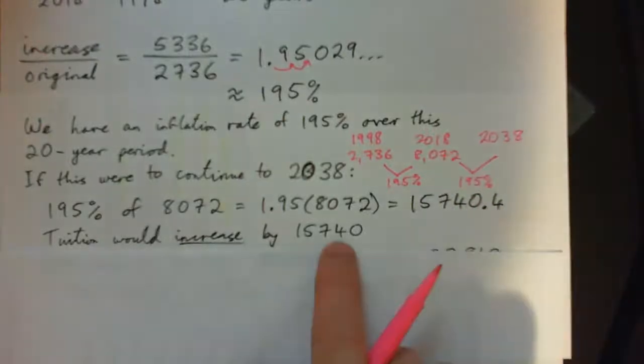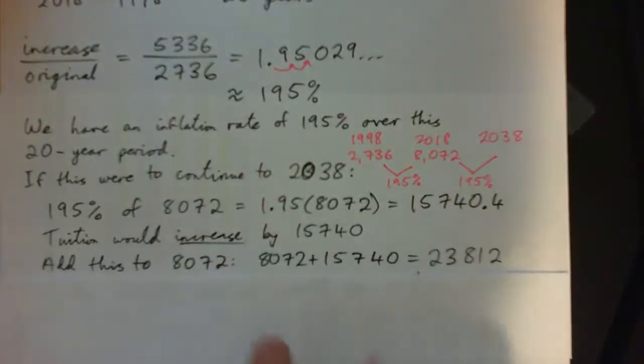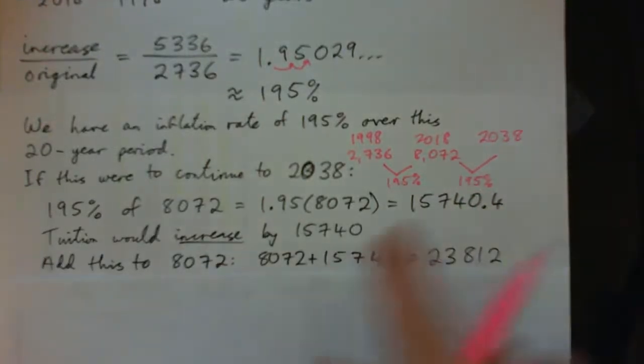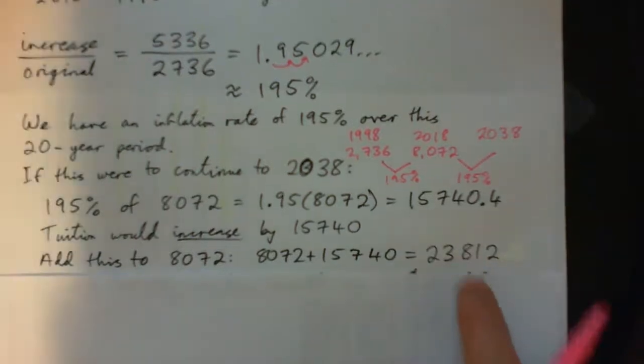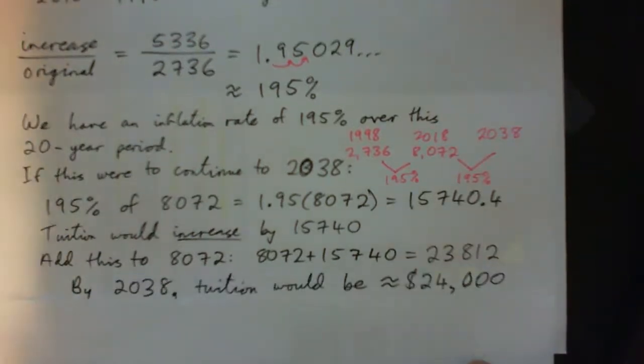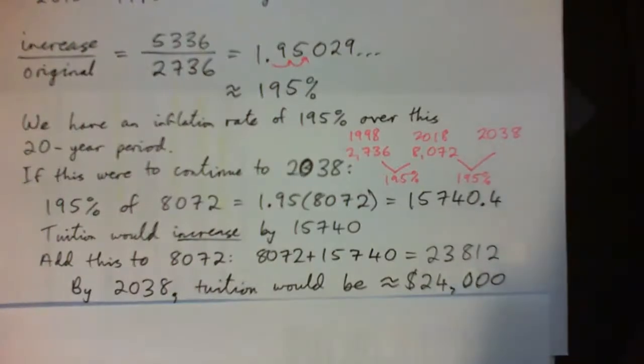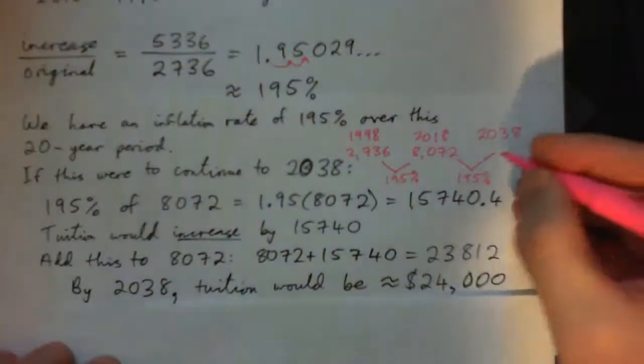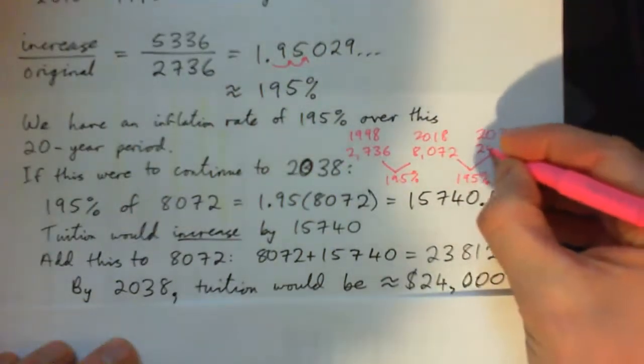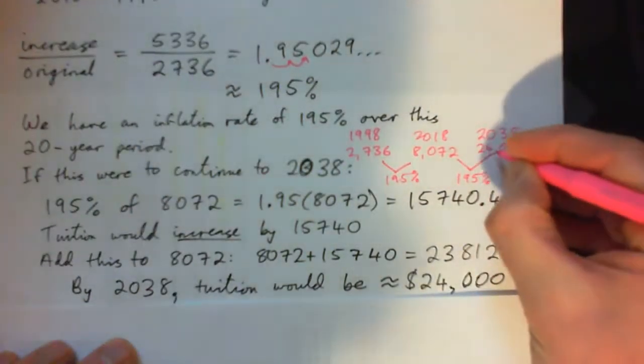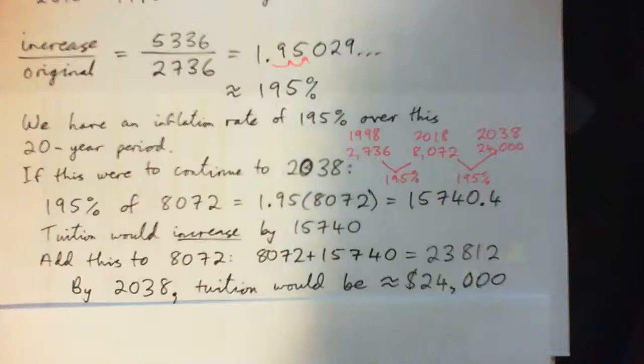The tuition would increase by that amount, but we've got to add this to what it was in 2018. So you add it to the 8,000 to get 23,812. And if you round it to the nearest thousand, that's going to be 24,000. So by 2038, we'll be about 24,000. Now for goodness sakes, who knows what it'll be?